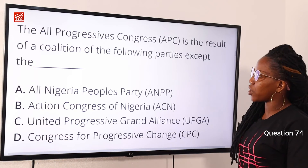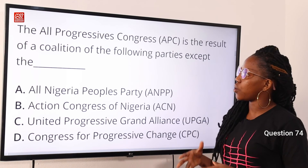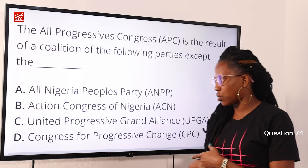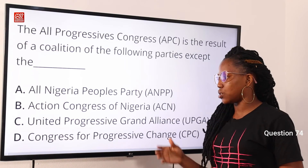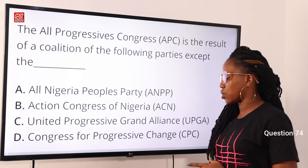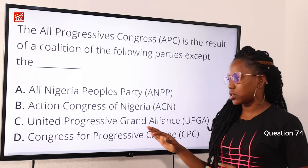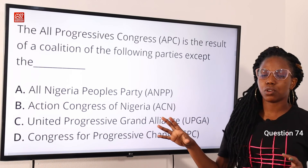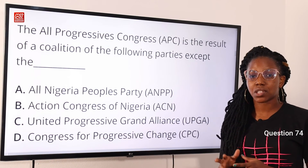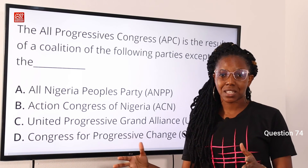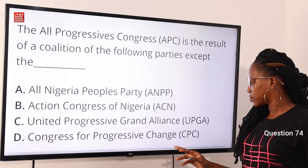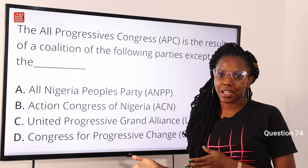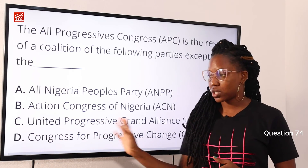Question 74: the All Progressives Congress, APC, is the result of a coalition of the following parties except — option A, All Nigeria People's Party, ANPP; option B, Action Congress of Nigeria, ACN; option C, United Progressive Grand Alliance, UPGA; option D, Congress of Progressive Change, CPC. The answer is option C, United Progressive Grand Alliance — this was not part of the union. APC was formed on the 6th of February 2013 from the union of ANPP, ACN, CPC, and a faction of APGA, the All Progressives Grand Alliance. So option C is the correct answer.